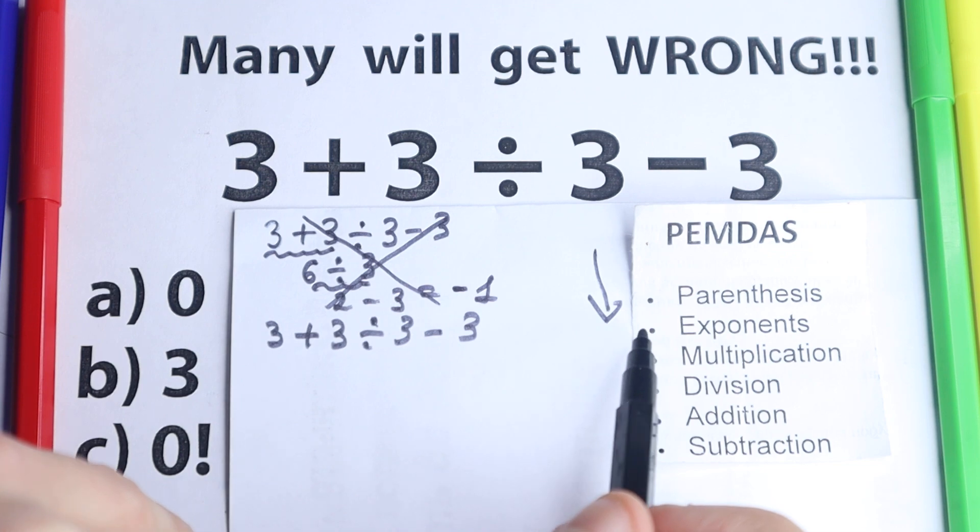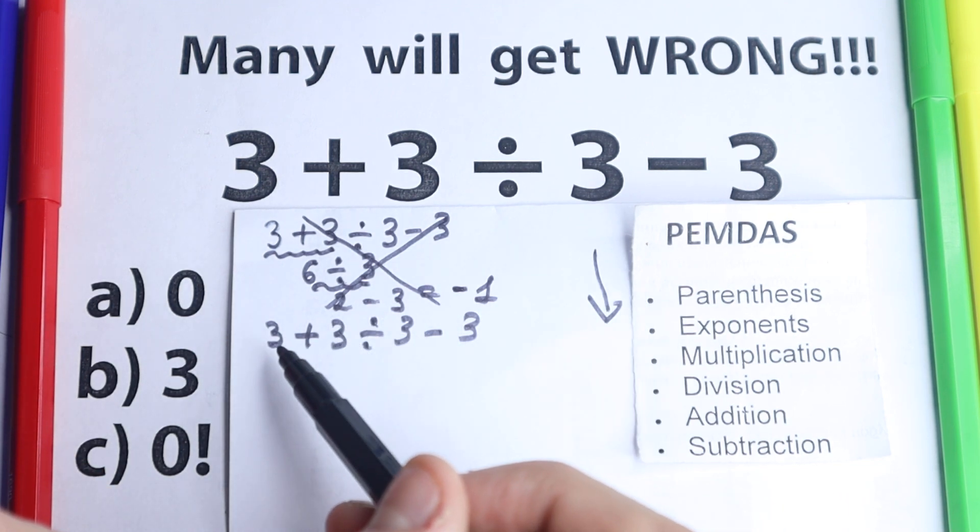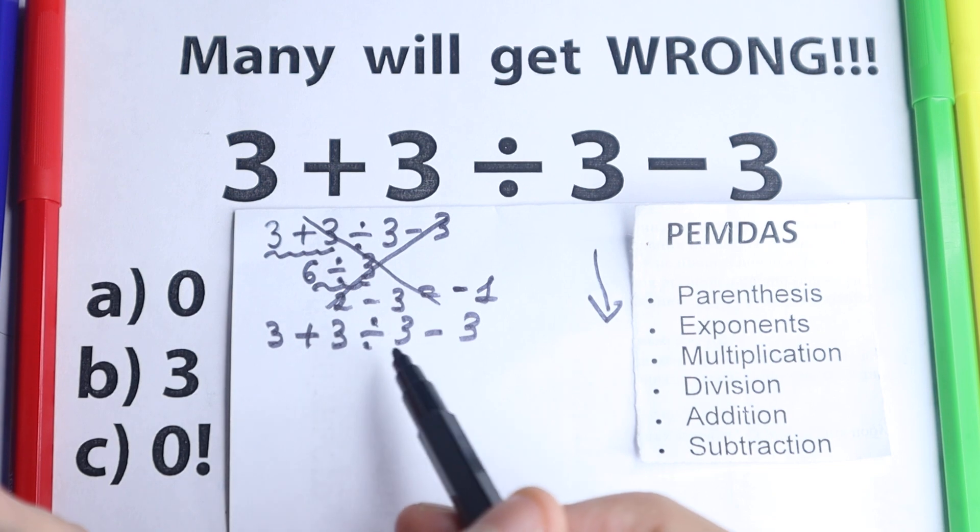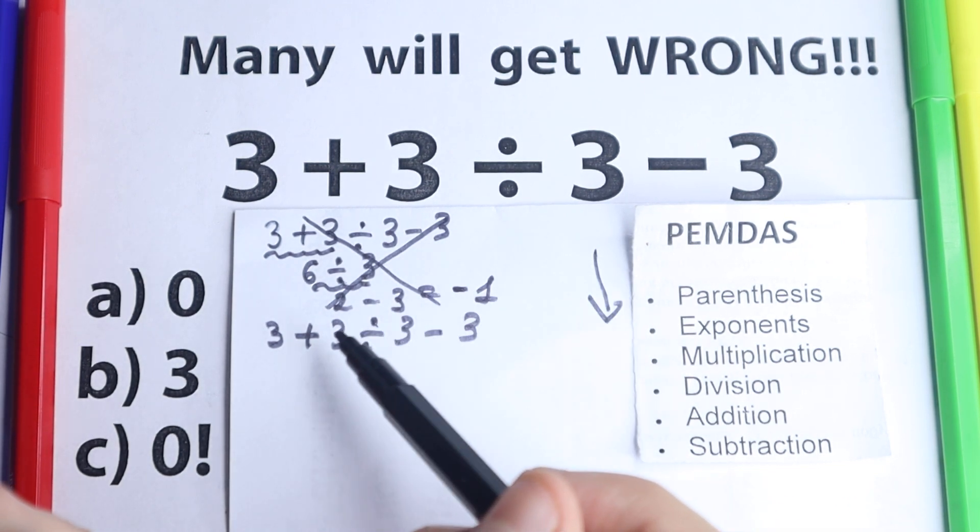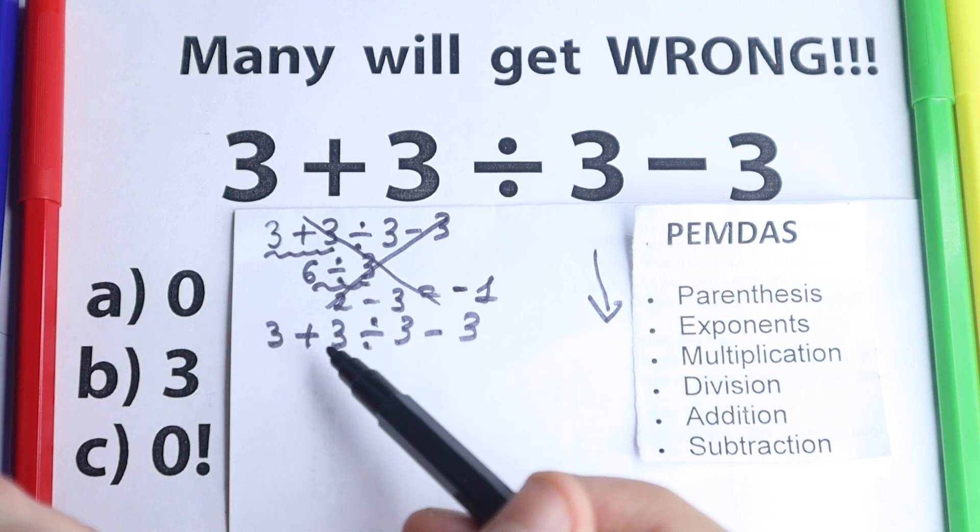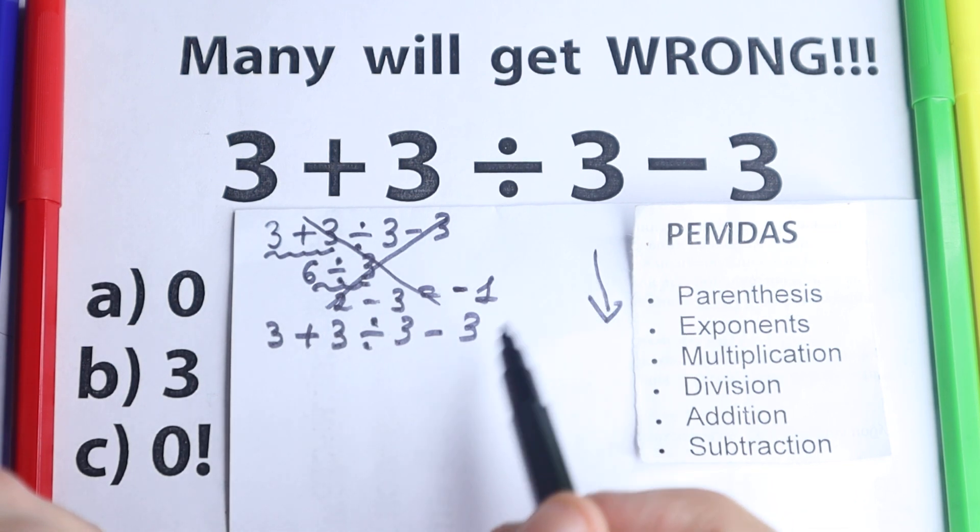First step according to PEMDAS: parenthesis. Let's look at it. Are there any parenthesis right here? No, I don't see any of those. So we just go to the next step. What about exponents? As I told before, we don't have any squares, cubes, powers right here. So we just go to the next step.